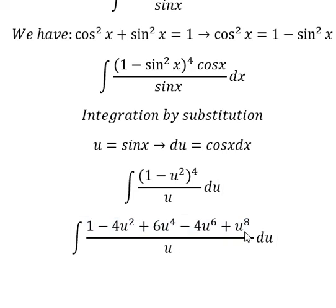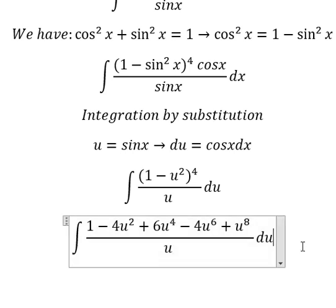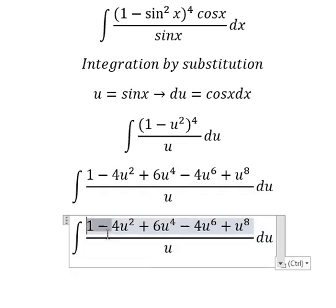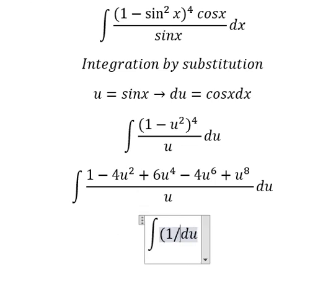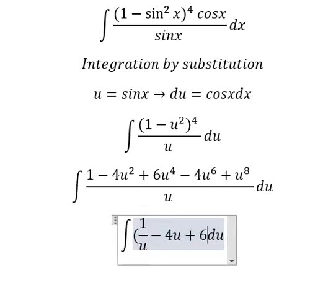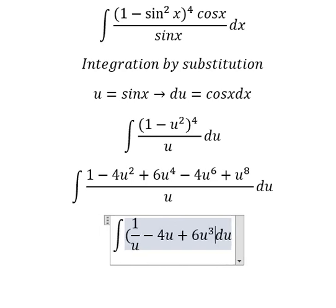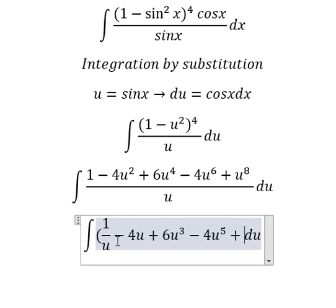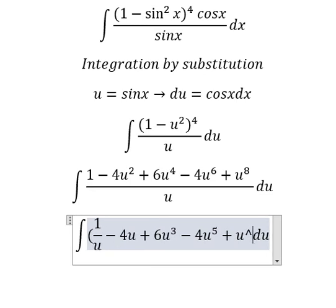Next, we divide both terms by u, and we have 1 over u minus 4u plus 6u to the power of 3 minus 4u to the power of 5 plus u to the power of 7.